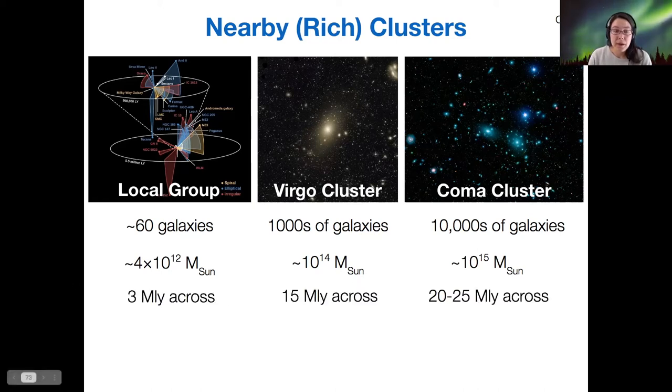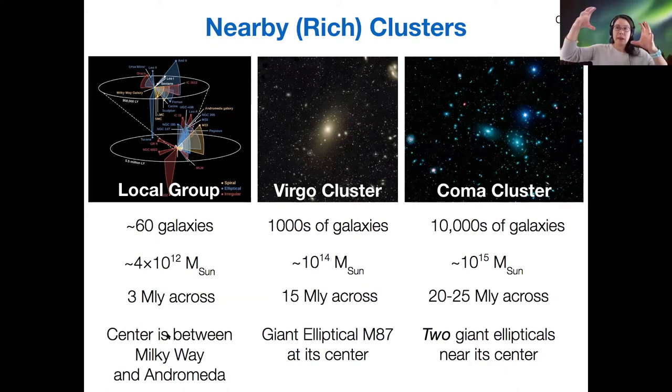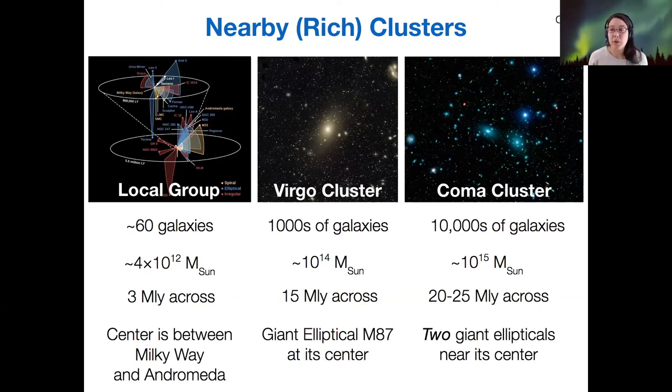There are different sizes of course, and the location, the central point of these, is also quite different. In the local group, the center is between Milky Way and Andromeda—there's nothing there. But in both the Virgo cluster and the Coma cluster, there are giant ellipticals at or near their center.